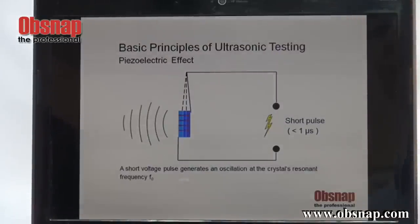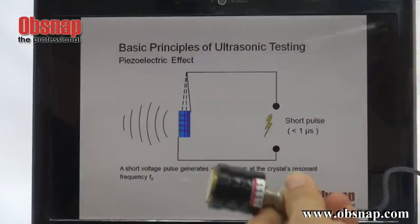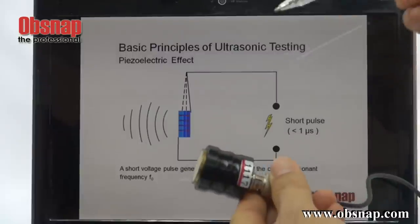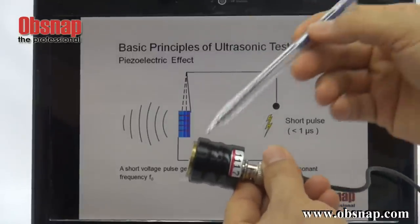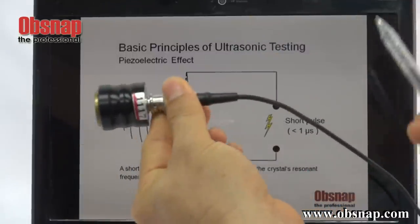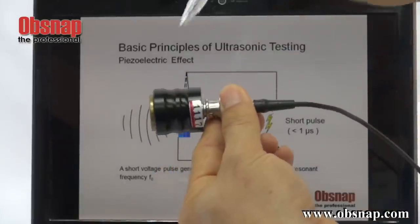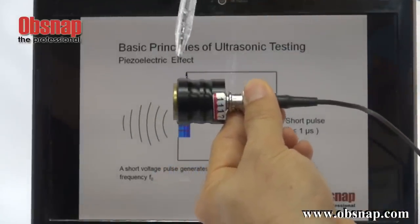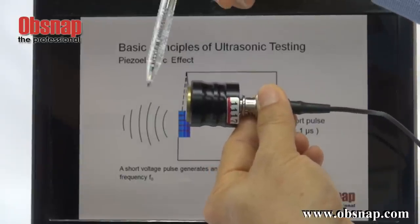Now, how is the sound wave actually generated? Inside this probe, there is a crystal. When we actually apply an electrical pulse, this crystal will actually vibrate. Once it vibrates, the sound will actually be generated.